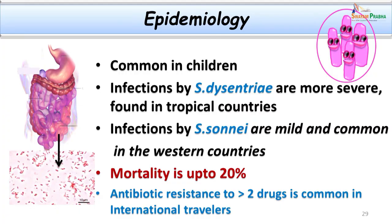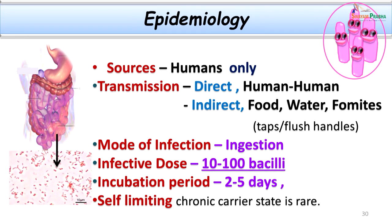Antibiotic resistance is now emerging, making it important to determine antibiotic susceptibility for targeted treatment. The source of infection is not carriers but patients themselves — there are no animal reservoirs; humans are the only source. Transmission can be direct from person to person — common among children in schools or daycare — or indirect, remembered by the four F's: food, flies, feces, and fingers. Taps, flush handles, and fomites can also facilitate transmission. Very importantly, only 10 to 100 bacilli are sufficient to cause disease.